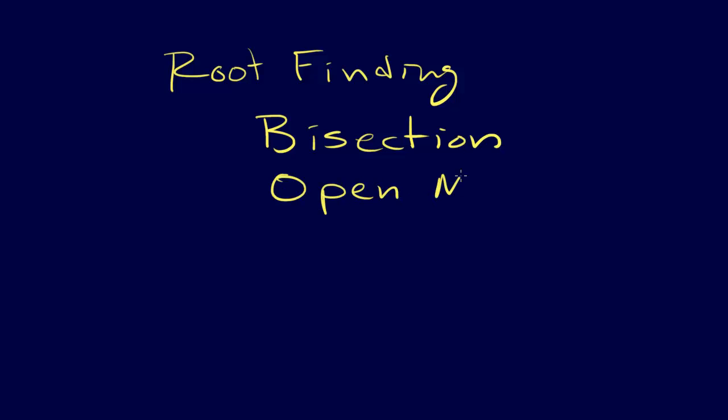So this is the unit on root finding. There are two basic methods that we can use for root finding. The first of these is called bisection, and the other is open methods. First, let's take a look at bisection.